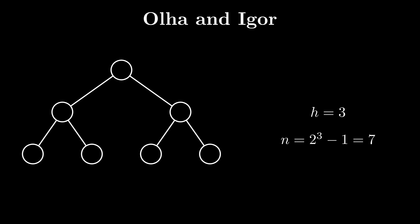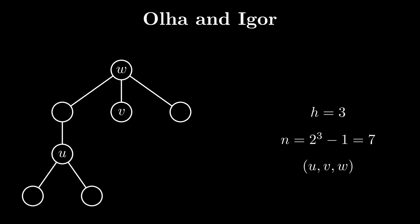We can ask queries of the form u, v, w which returns the LCA of the nodes labeled u and v if the tree were to be rooted at the node labeled w.